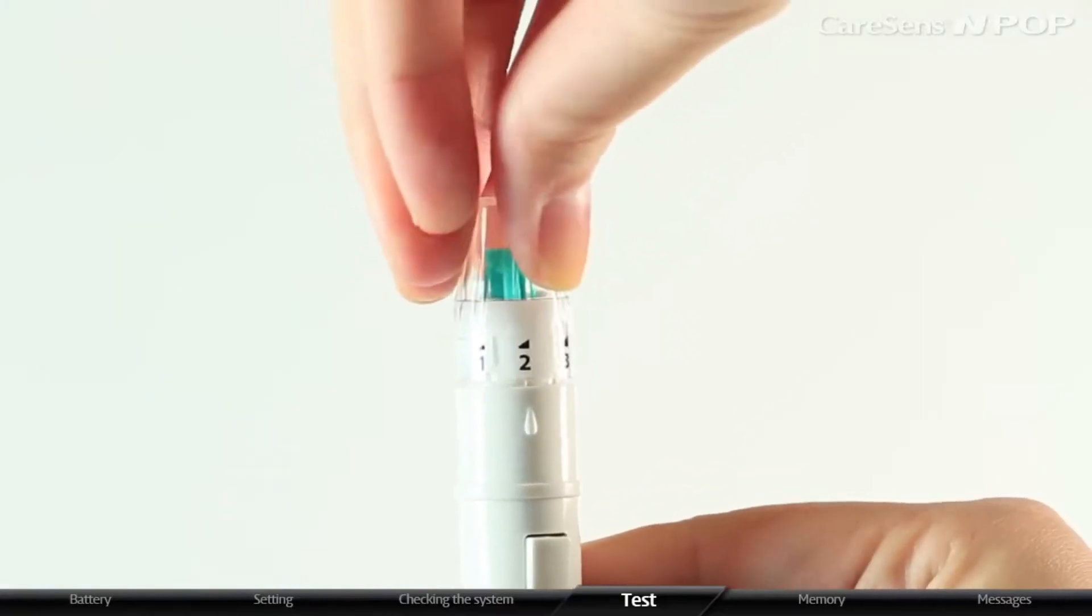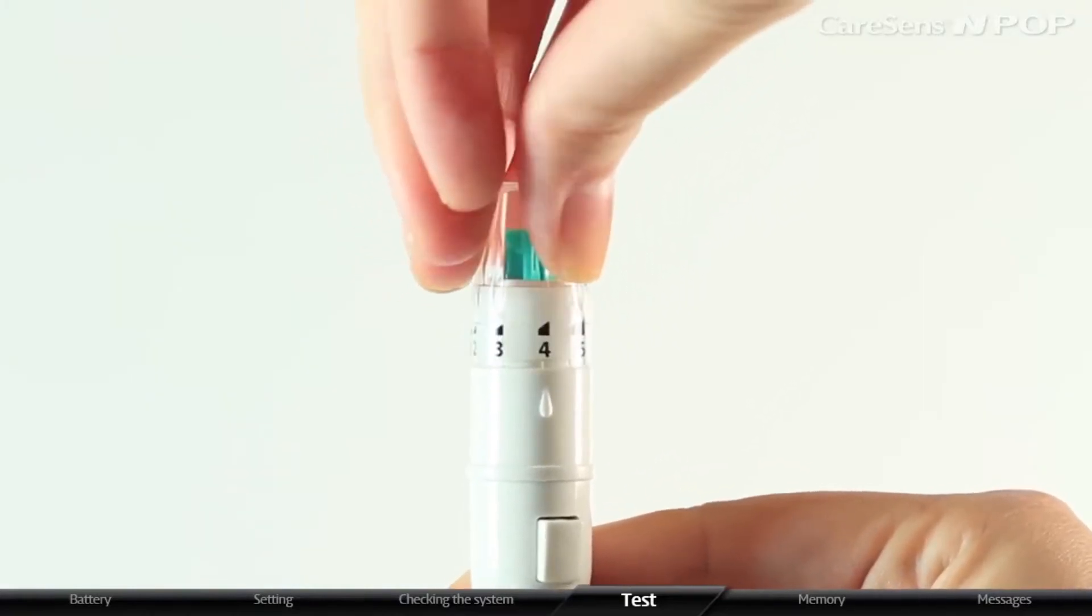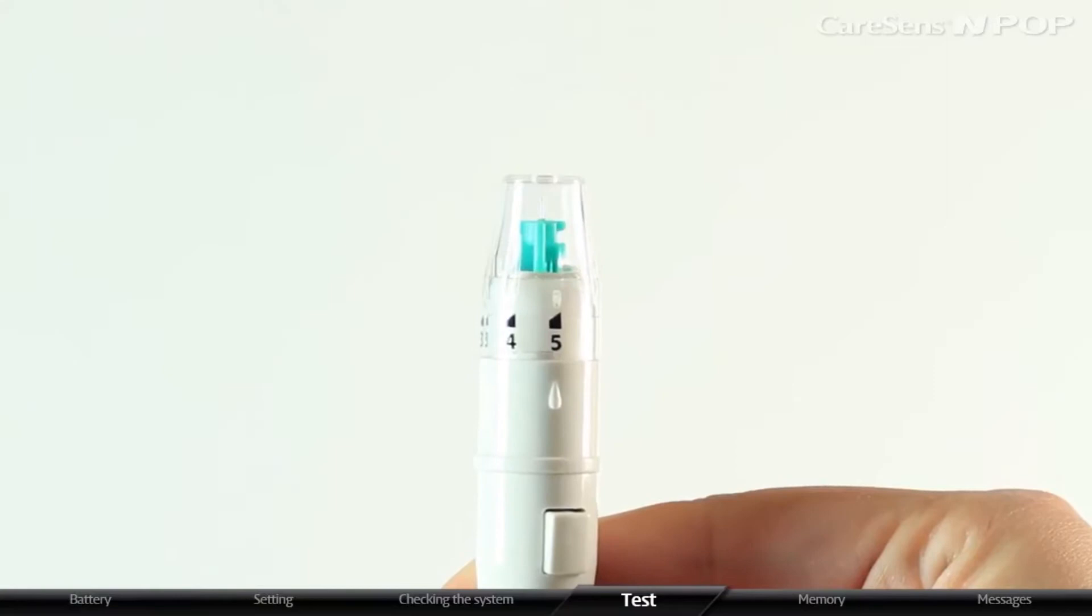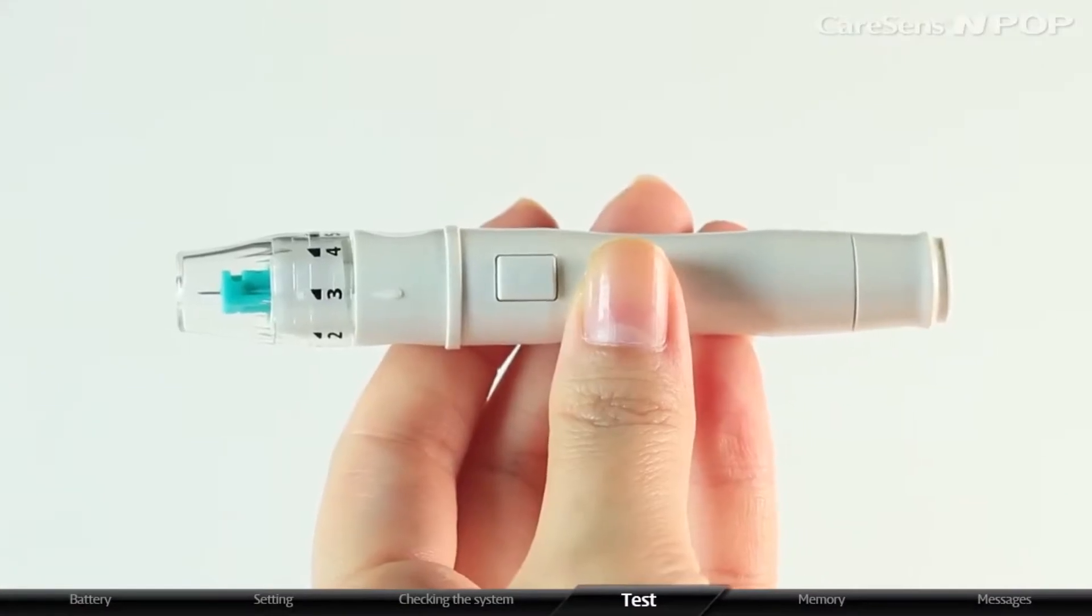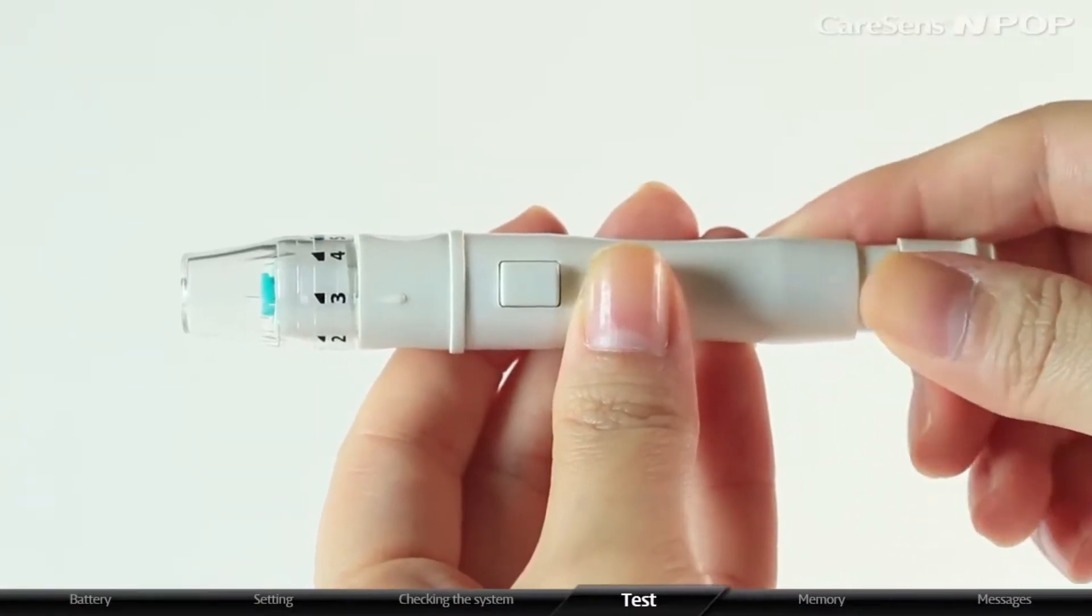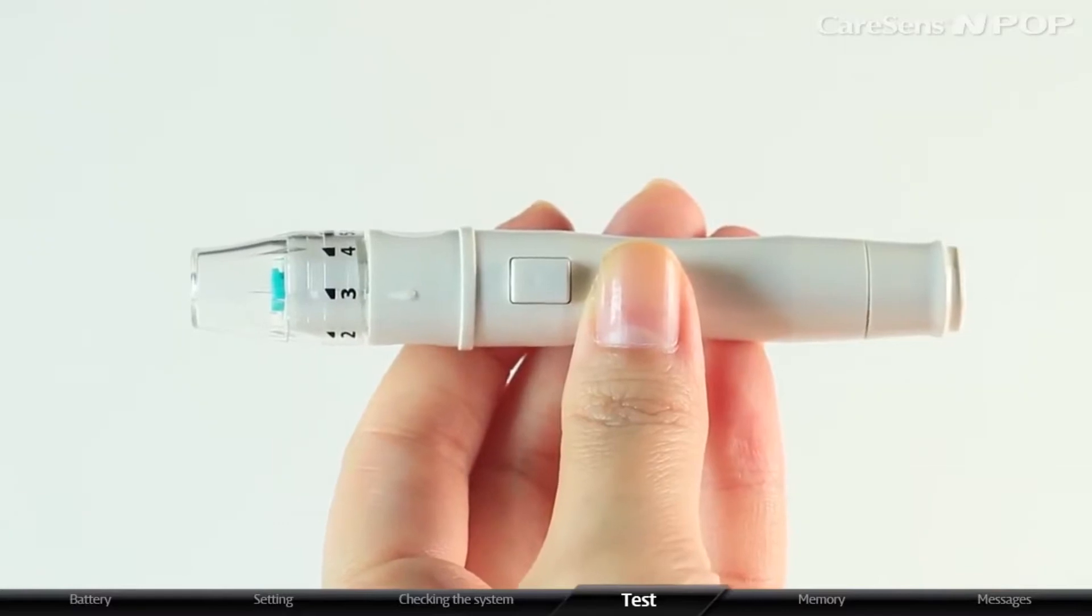You can adjust the depth level of the lancing device from level 1 to level 5. As the number gets greater, the skin depth to retrieve blood gets deeper. To cock the lancing device, pull the device with one hand and pull the sliding barrel until you feel a click.